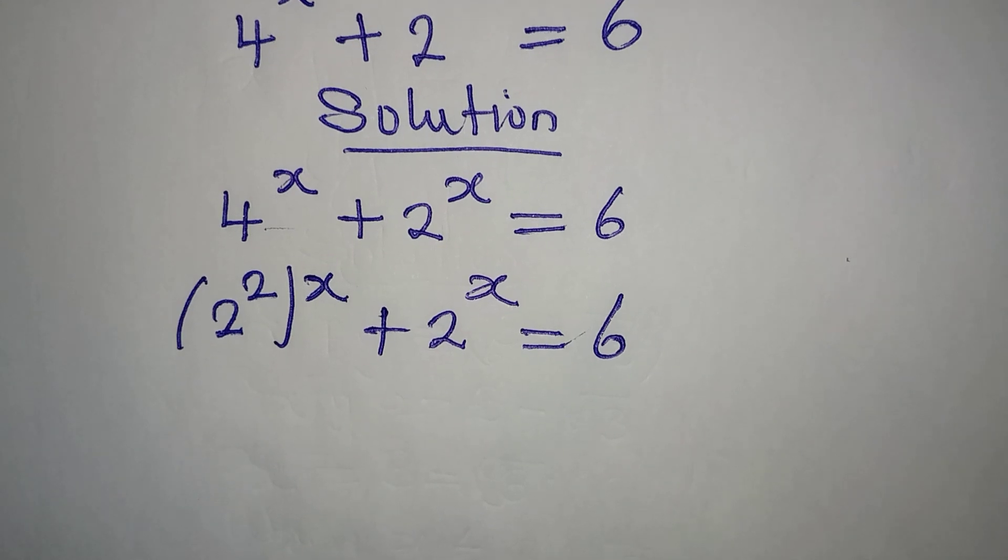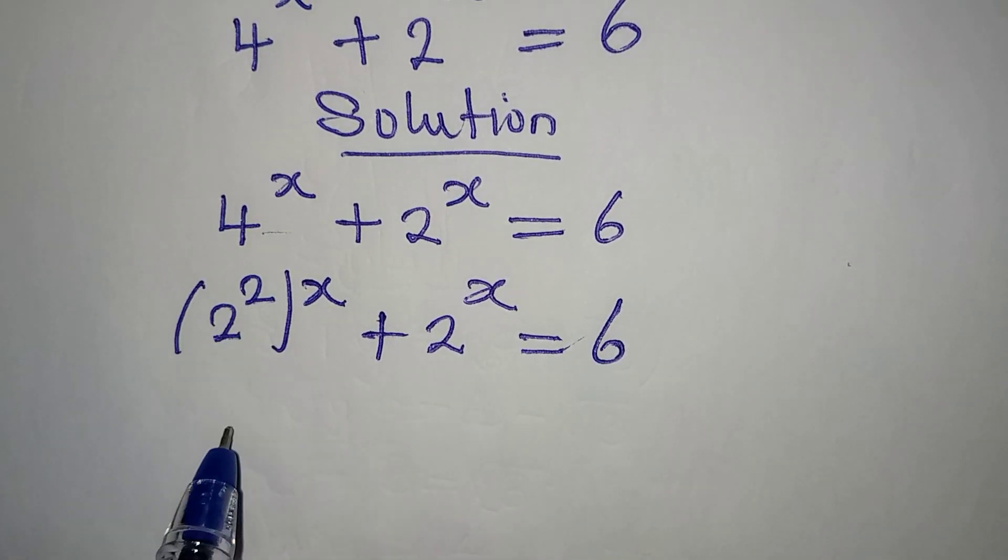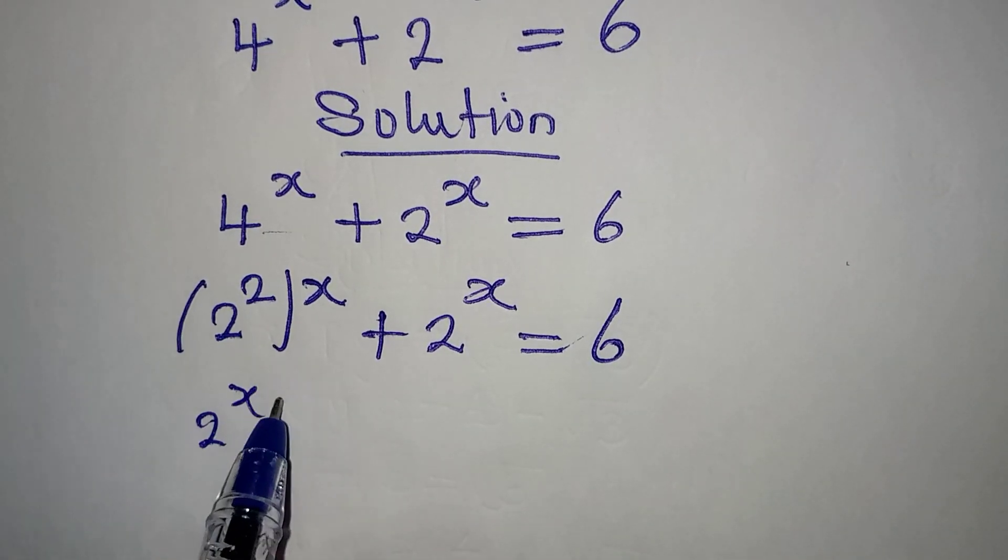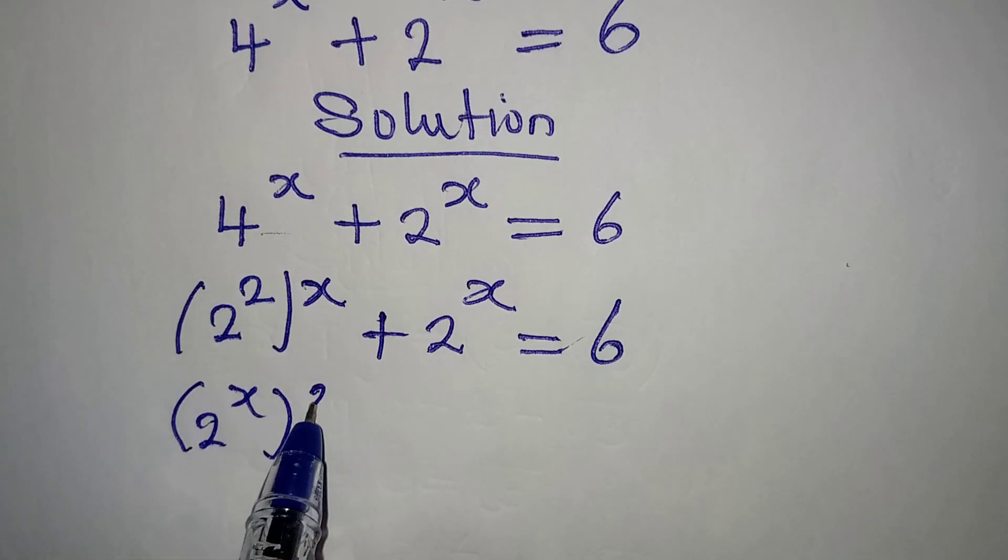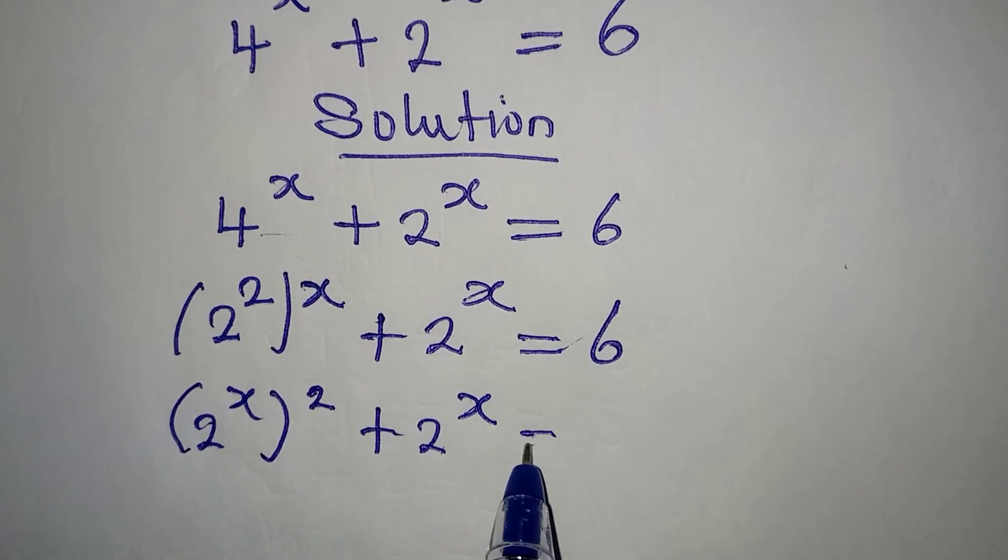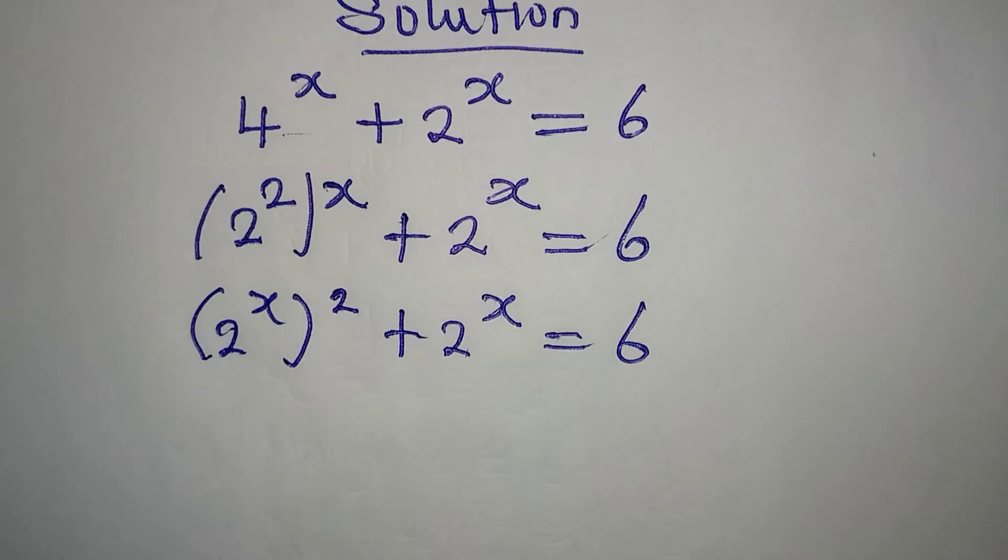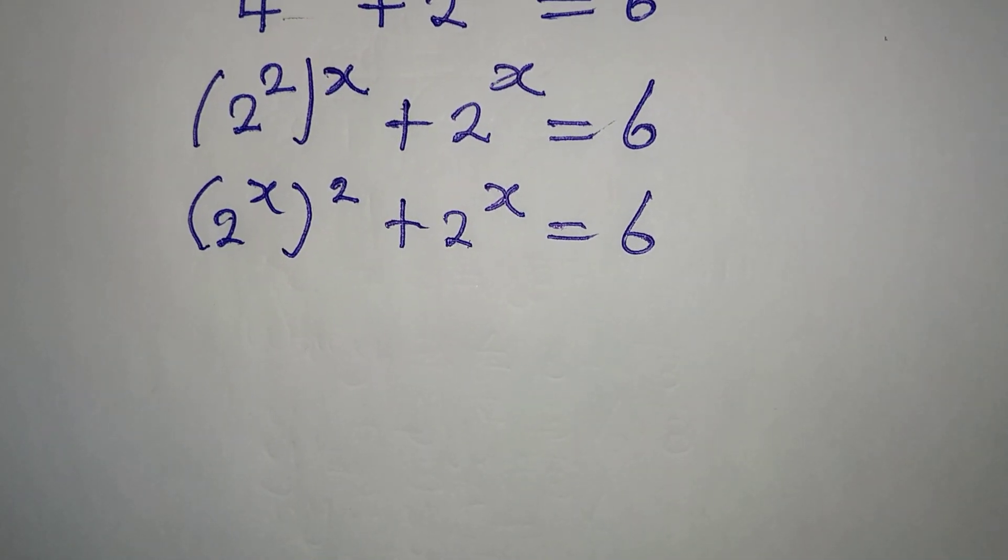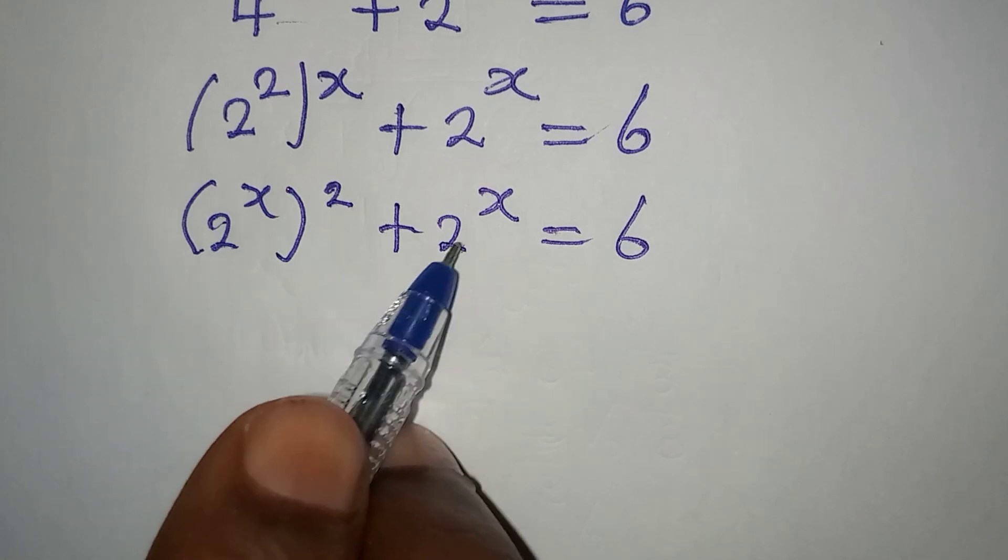Now, what do I do from here? I can turn this around to 2 to the power of x squared plus 2 to the power of x equal to 6. From here, what do you observe? You will see that we have the same thing here.